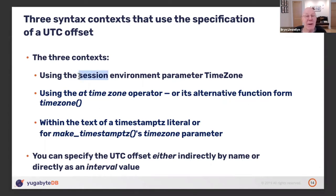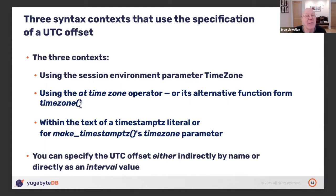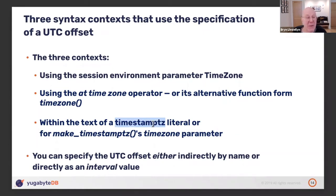The three contexts are: first, you can simply set the environment parameter with — confusingly — 'SET TIME ZONE name' or 'SET timezone = something'. The syntax of what follows can vary and different variants are allowed in those two different spellings. The second context is the AT TIME ZONE operator — and just to make life harder, there's also a function called timezone() with identical semantics, which is more convenient to use in general. The third context is within the definition of a timestamp value, either using the make_timestamptz() function or in a literal value for timestamptz.